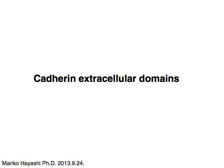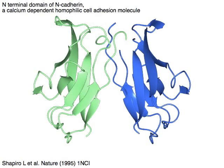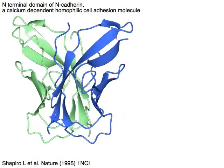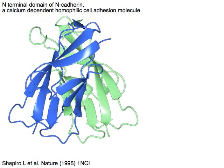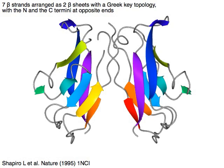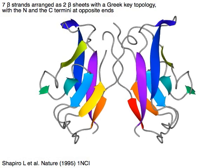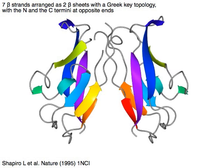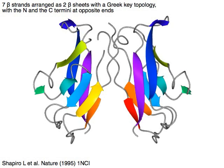Cadherin extracellular region, N-terminal domain of N-cadherin, a calcium-dependent hemophilic cell adhesion molecule. Seven beta strands are arranged as two beta sheets with the Greek key topology, with the N and C-termini at opposite ends.